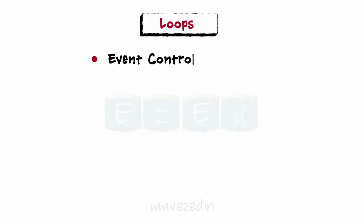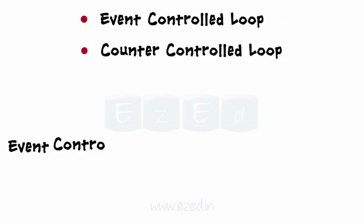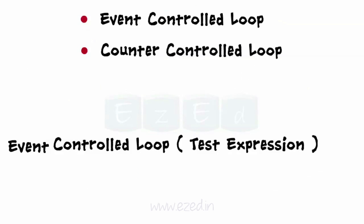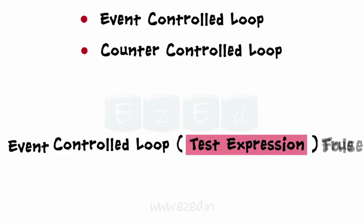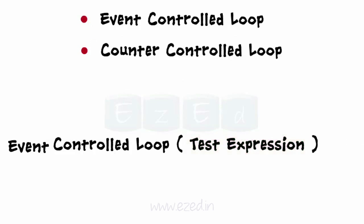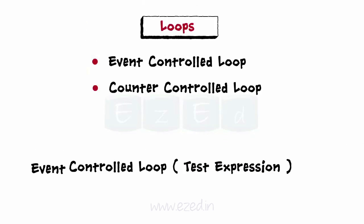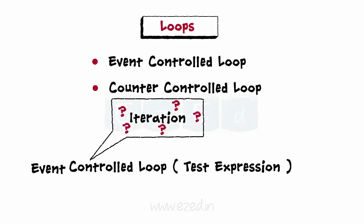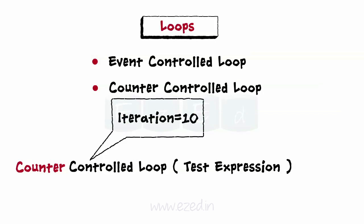Loops can be programmed as event control loops or counter control loops. In an event control loop, the occurrence of an event changes the test condition from true to false. This is used when the number of iterations is not known. When the number of iterations is known, then the counter control loop is used.